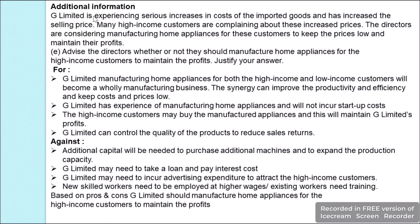Additional information states that G Limited is experiencing a serious increase in the cost of imported goods and has increased the selling price, causing many high income customers to complain. The directors are considering manufacturing home appliances for these customers to keep prices low and maintain profits. Part (e) asks us to advise whether or not G Limited should manufacture home appliances for high income customers, with justification.